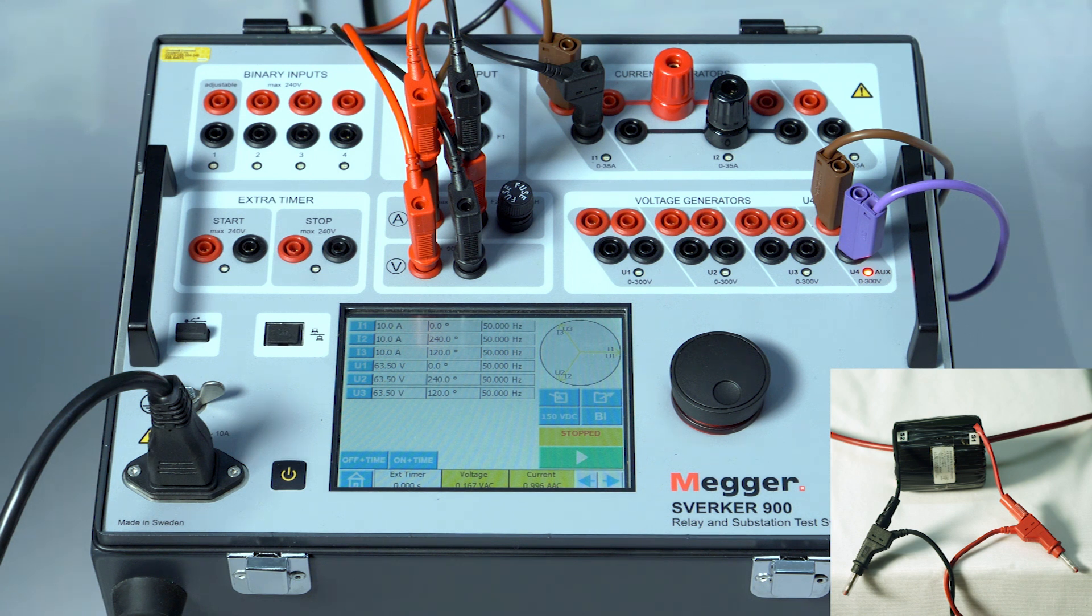CT testing. Burden impedance test. The burden test is performed to ensure that the load VA is not more than the value specified in the nameplate.